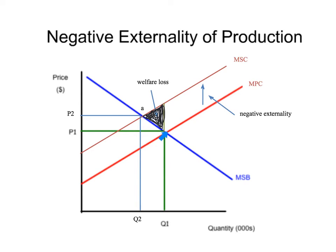If a paint factory were to emit fumes that were harmful to people in the area, there's a cost to the community that is greater than the cost of production paid by the firm. The firm has its private costs, represented by the marginal private cost curve. But on top of that, it's creating external costs. Thus the marginal social cost of production is greater than the marginal private costs.